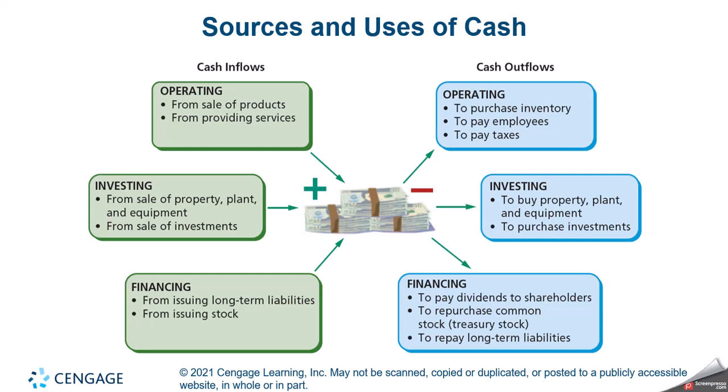Cash inflows and outflows by section: in the operating section, inflows come from the sale of products or services — what we do in our day-to-day business. A cash inflow in investing means we're selling off some assets, whether property, plant, and equipment, or investments. Cash inflows in financing come from selling bonds, getting a bank loan, or issuing shares of stock. Cash outflows in operating are our day-to-day bills: buying inventory, paying employees, paying employment taxes, paying accounts payable as it comes due.